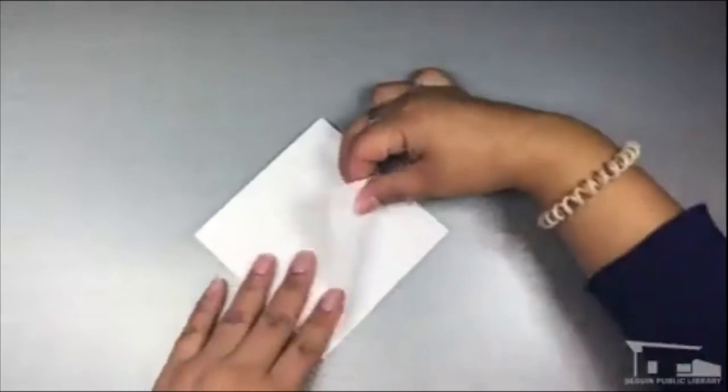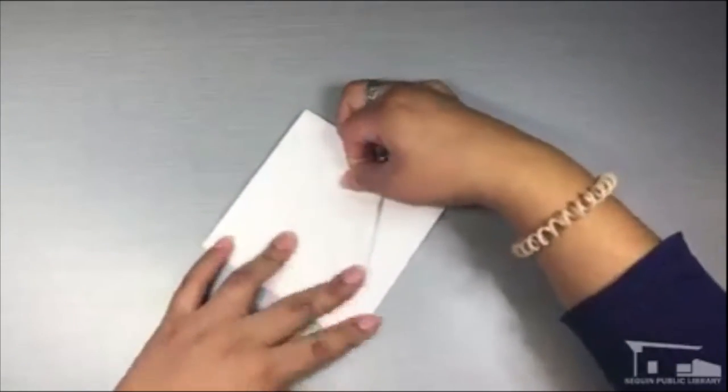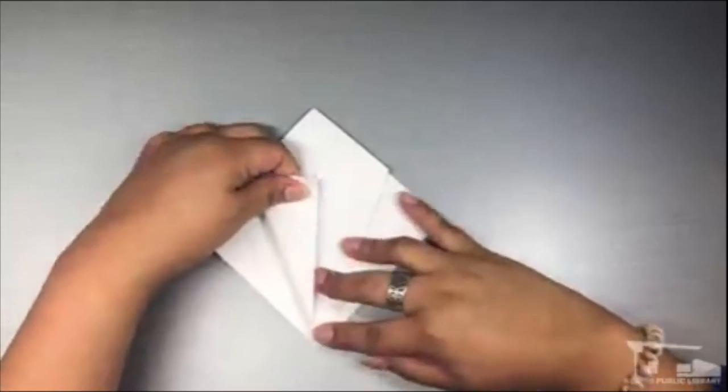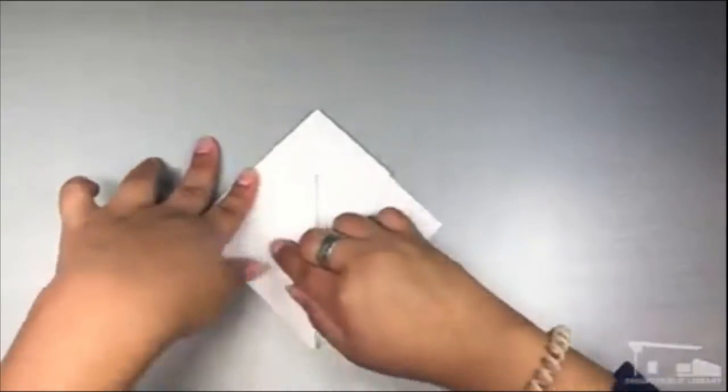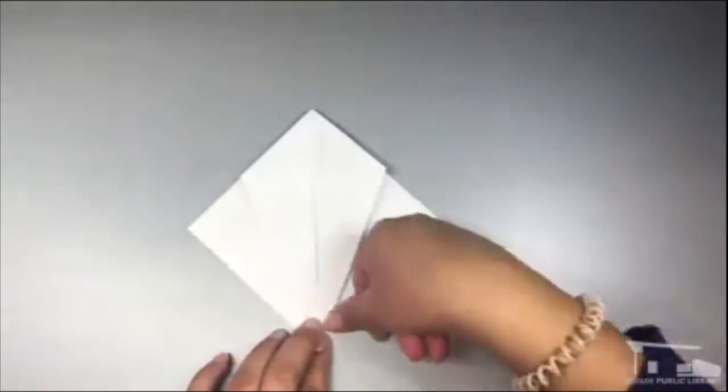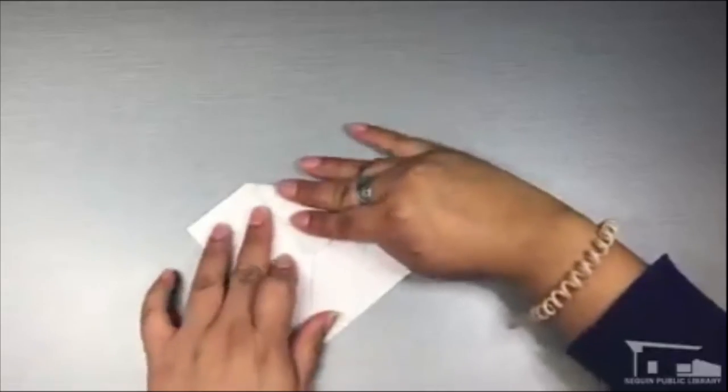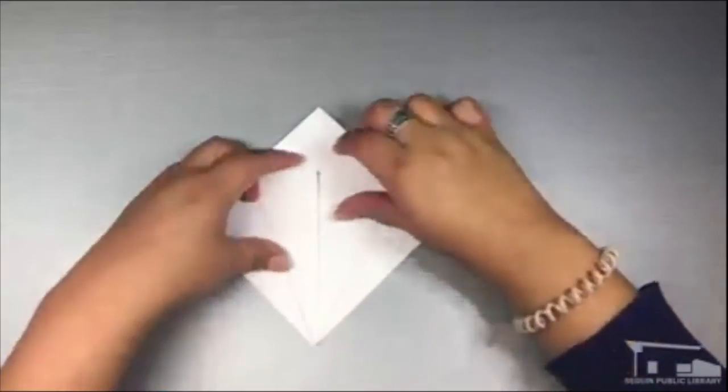Turn it so the open ends of the diamond face you. Fold the two topmost wings of the diamond to the center, carefully aligning the edge with the center crease. The more precise you are with your folding, the easier the next few steps will be. Fold the diamond tip down over where those flaps meet, creasing well.